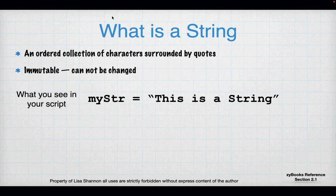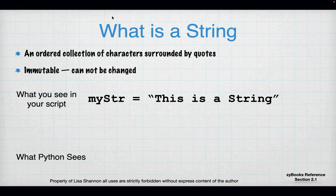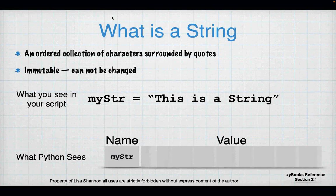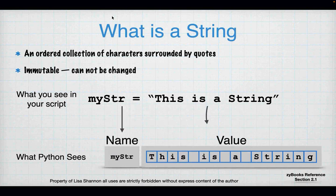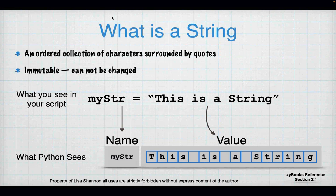Here's what you see in your script. I have a variable called 'meister'. We know it's a variable because it's on the left-hand side of a single equal sign. On the right-hand side I have the words 'this is a string' in quotes, and Python will understand this as a string. What Python sees is: name = meister, value = 'this is a string'. I represent the string's letters in individual boxes because this is how you have to think about a string in most programming languages.